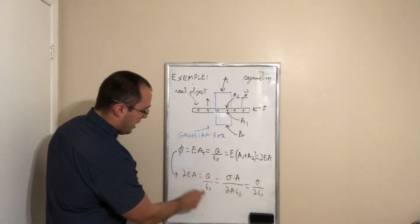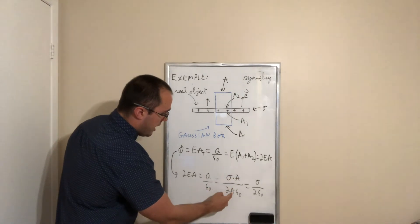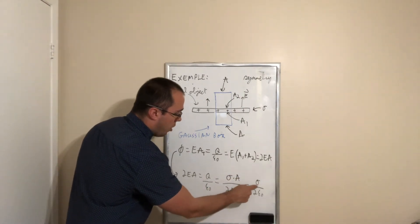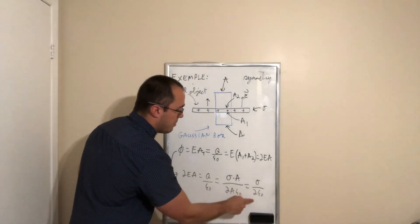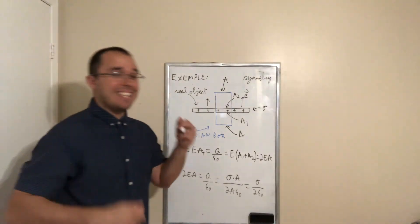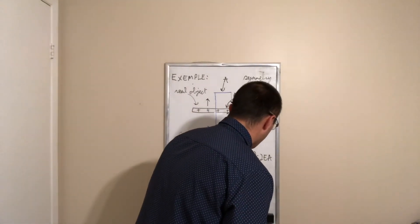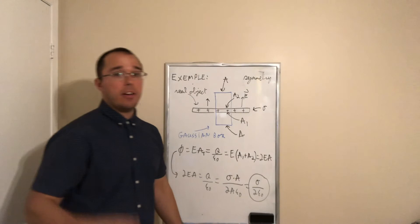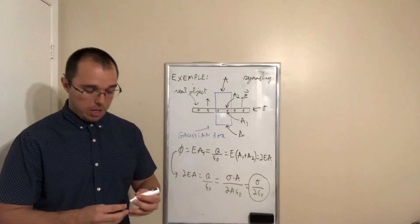Divided by, we take the 2A, we flip it on that side. Notice that A cancels, and we get equal to the surface charge density divided by 2 epsilon zero. This is exactly the formula that was shown at the end of chapter 2.